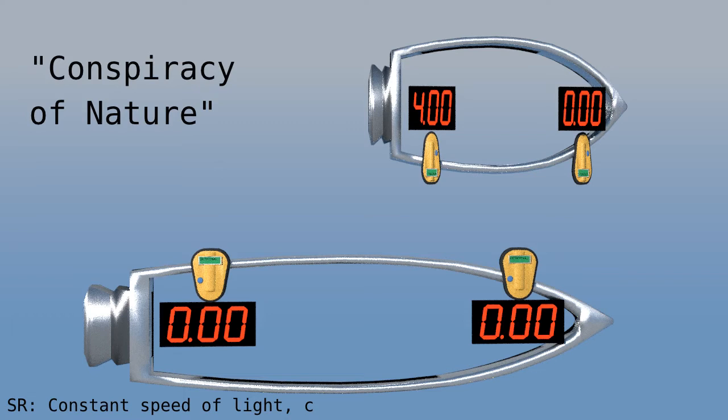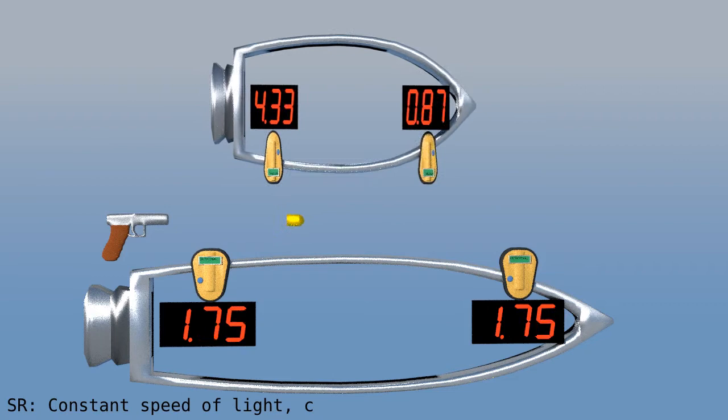We should point out that the velocity is only measured to be the same for light. For example, if we fire the bullet at the same speed as a moving spaceship, that spaceship will measure the bullet speed to be zero.